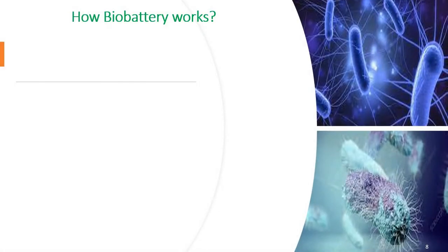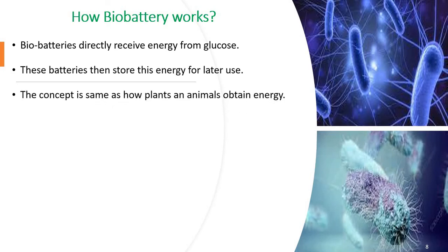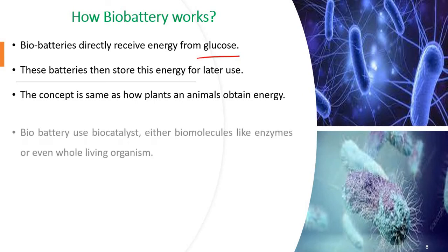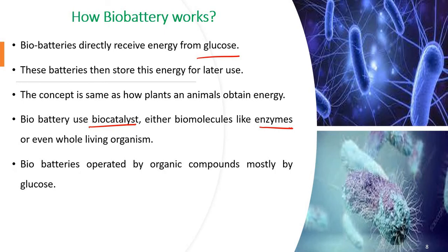Now let us see how bio-batteries work. Bio-batteries directly receive energy from glucose. The glucose obtained from the consumption of food is stored by the batteries for later use. This concept is the same as how plants and animals obtain energy — energy is generated with the help of glucose. Bio-batteries use biocatalysts — enzymes — that are biomolecules, or even whole living organisms. Bio-batteries are operated by organic compounds, mostly glucose.